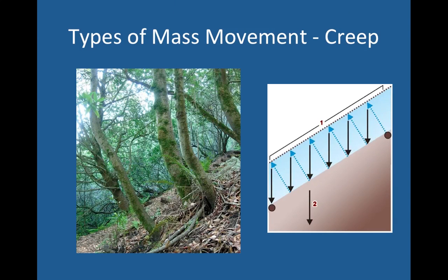Finally, the slowest type is called creep. On the left you can see what it looks like — it causes a creepy-looking forest with trees and things leaning in a funny way. On the right, it shows what happens. As the soil freezes in the winter and thaws in the summer, over time the soil zigzags downhill. Water expands when it freezes, so when the water in the soil freezes it expands, and when it thaws it contracts and moves downward a little bit. Very slowly, the soil zigzags down the slope — slowly enough that trees have a chance to adapt by growing in a curved path.